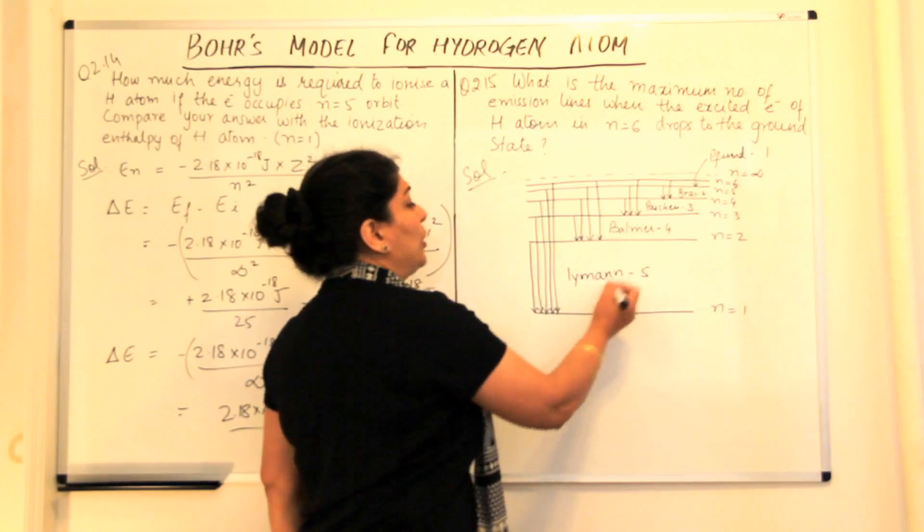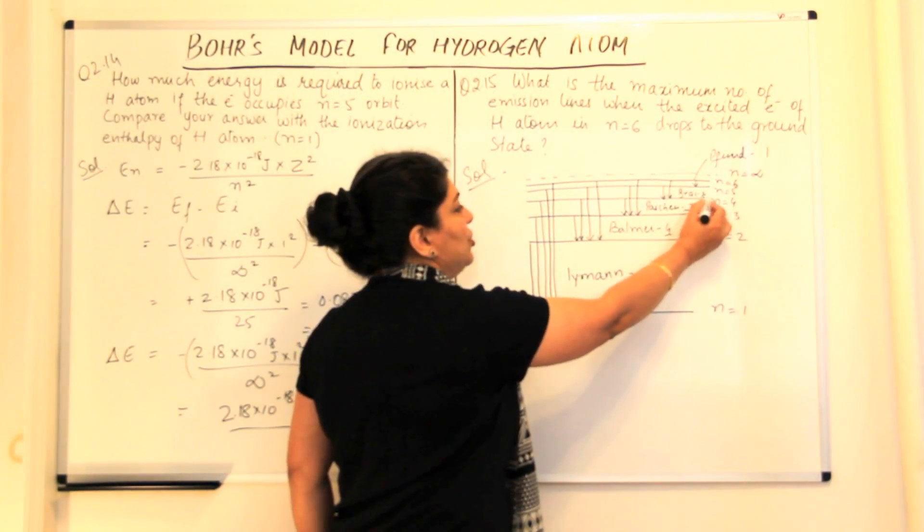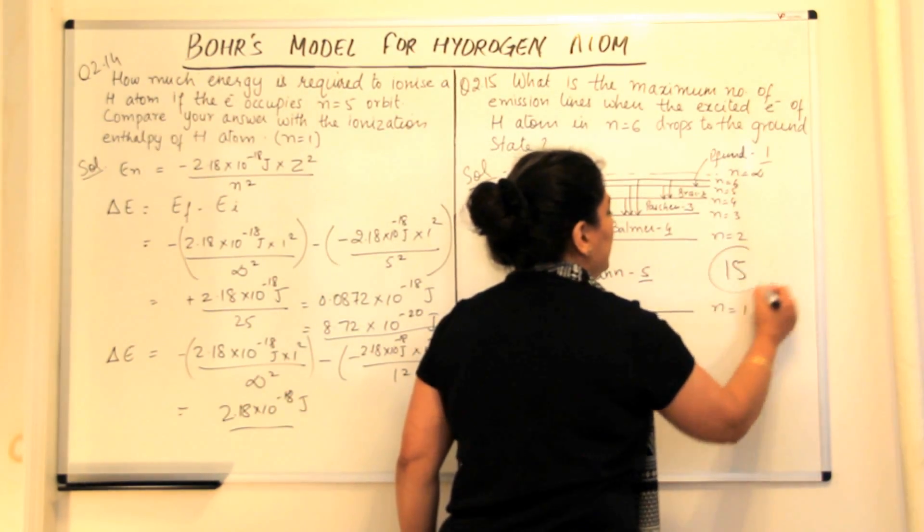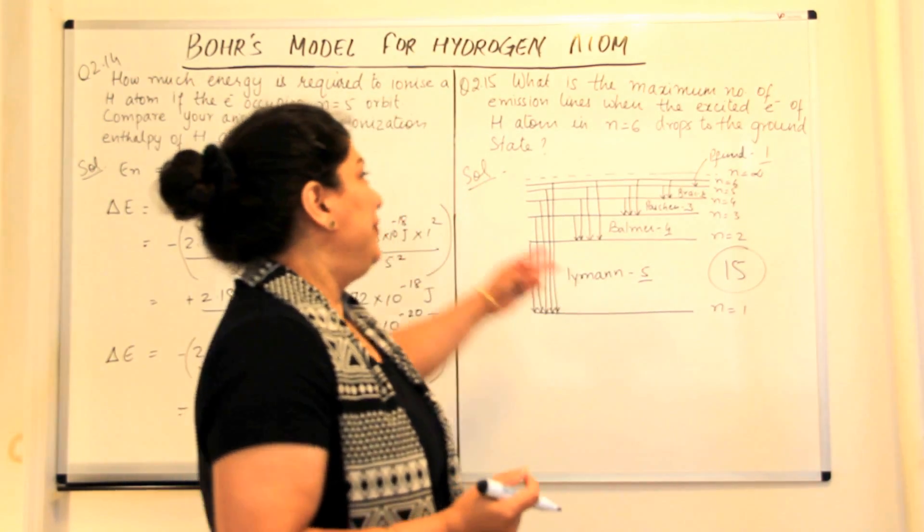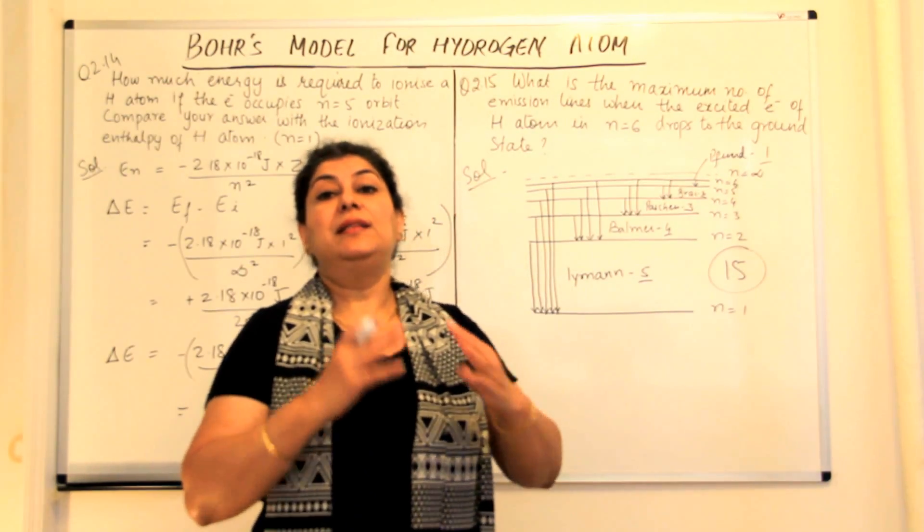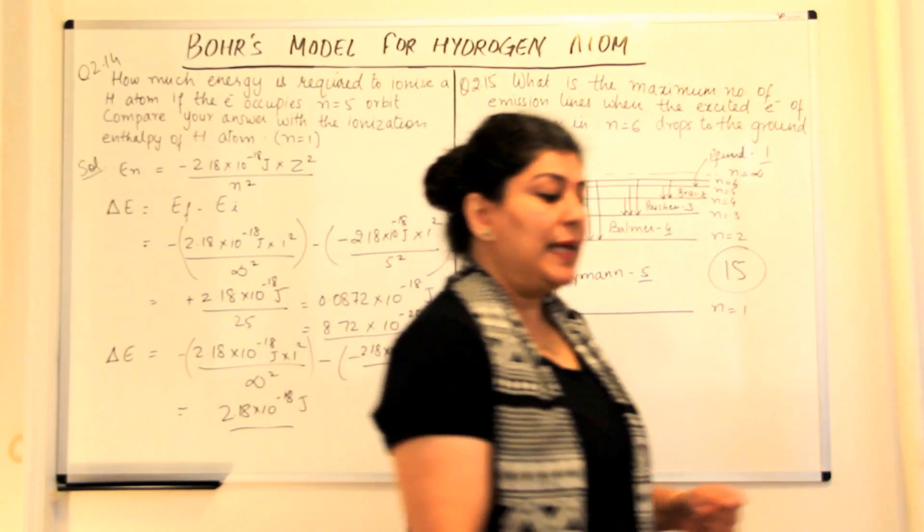So what are these total number of lines? Five lines of Lyman series, four, three, two and one. If you add all these up, we get 15. So we get 15 lines in all if the electron jumps from sixth level to the first level. These are the number of possible lines that we can get. That was the practical counting method.